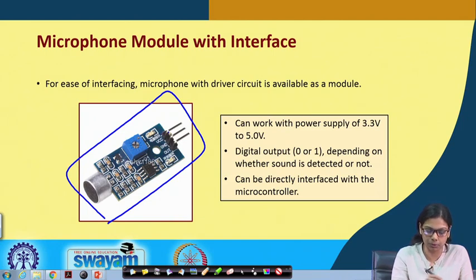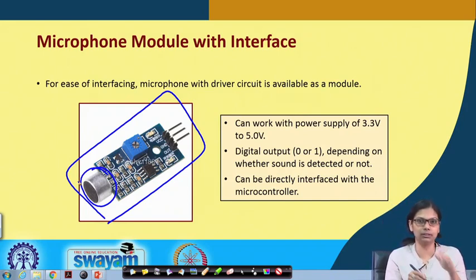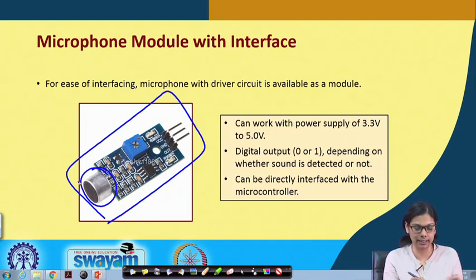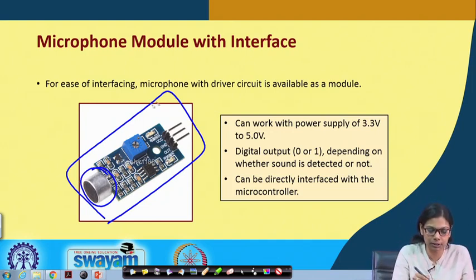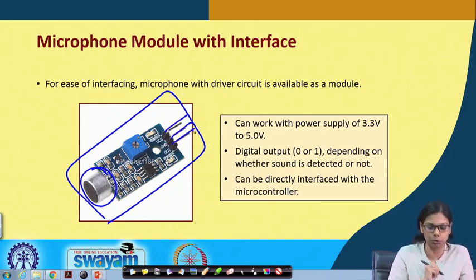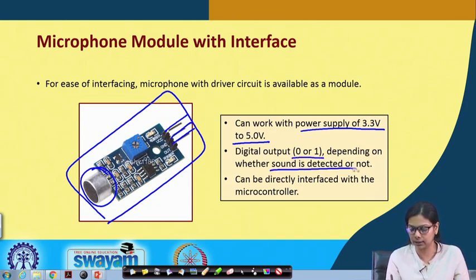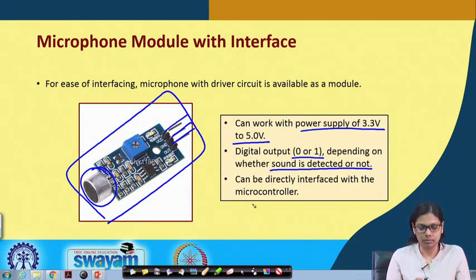What is generally done is that the whole set of interfacing is put inside a particular chip for ease of interfacing. We can use this particular chip for interfacing. If you use a single microphone you have to connect it with the circuit as shown, but if you use this particular microphone module it comes with a driver circuit as a whole module. There is a VCC, ground, and an output pin, and it can work with a power supply of 3.3 V to 5 V. The digital output is 0 or 1 depending on whether sound is detected or not, and we can directly interface it with the microcontroller.